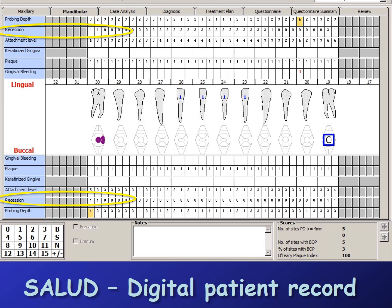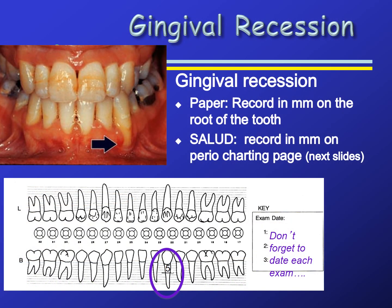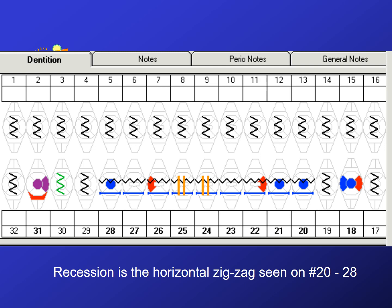Gingival recession is recorded similarly to how we record probing depths — 6 numbers per tooth, 3 for the facial and 3 for the lingual. To measure gingival recession, we measure the distance between the margin of the gingiva and the CEJ. This canine has a long clinical crown due to recession of the gingiva. The symbol for recession is the horizontal zig-zag line.